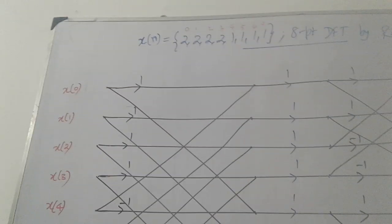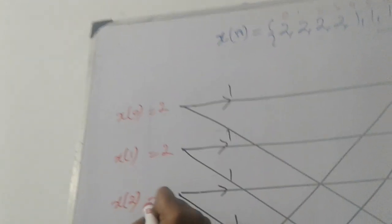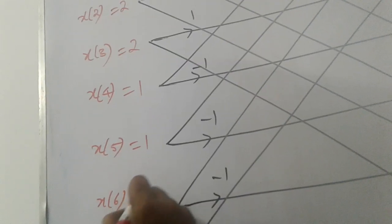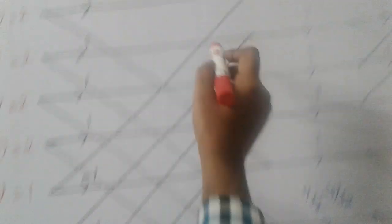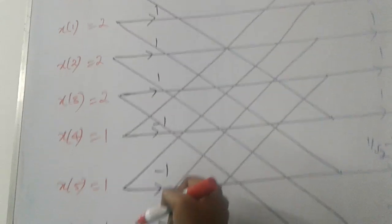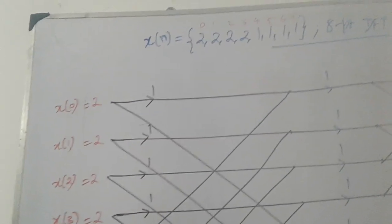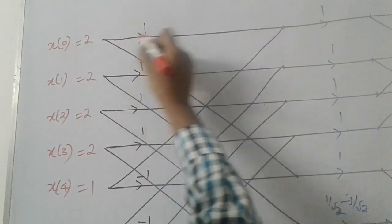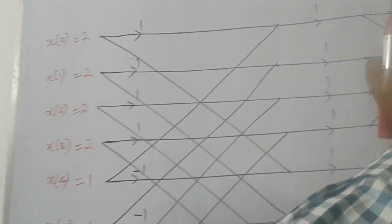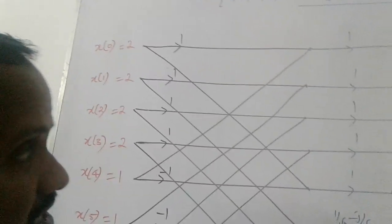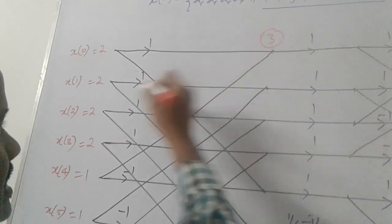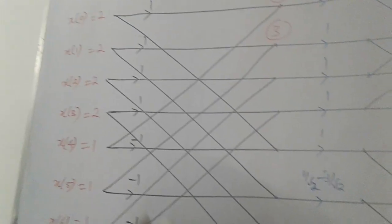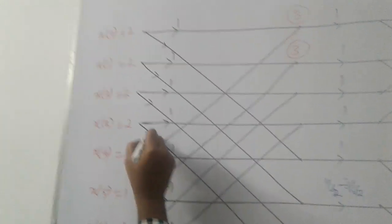Now we proceed with the problem. Input is normal order: x(0) through x(7), which is four 2's followed by four 1's. Label the points A1, A2, A3, A4, B1, B2, B3, B4. This point is A1 plus B1: 2 plus 1 equals 3. Similarly, 2 plus 1 equals 3. Arrow marks: four down and four up for the first stage, then two down and two up, then one down and one up. All multiplication factors here are 1.